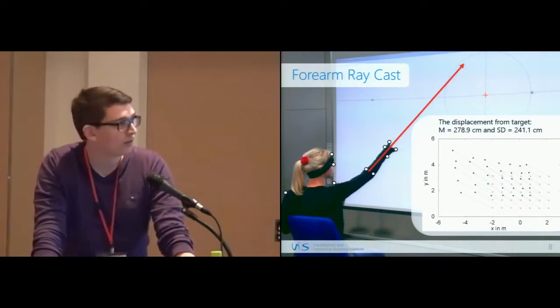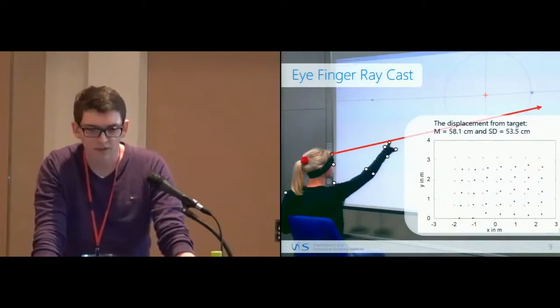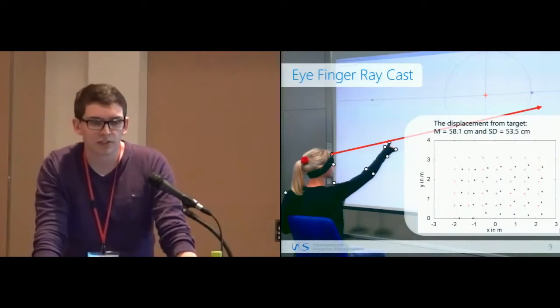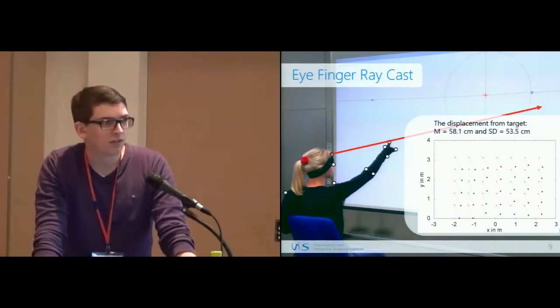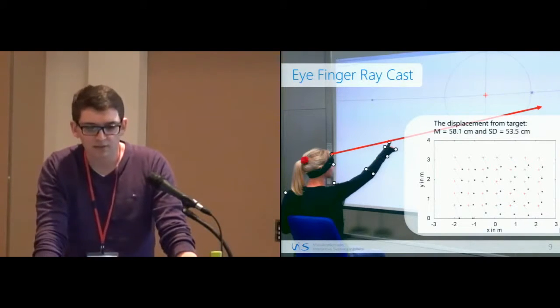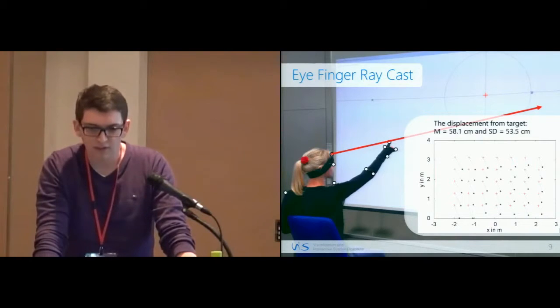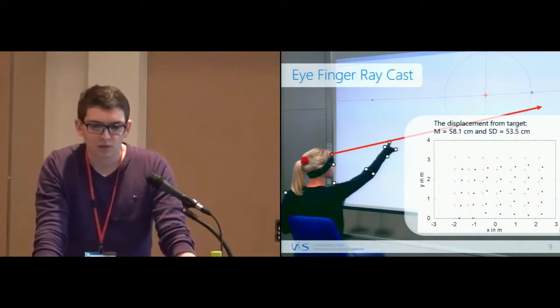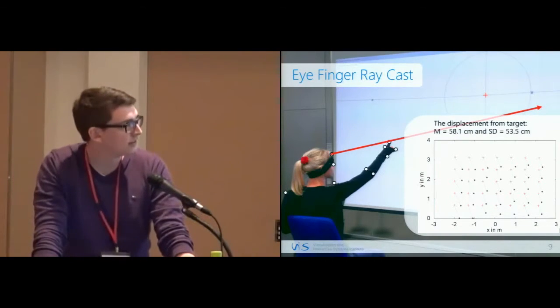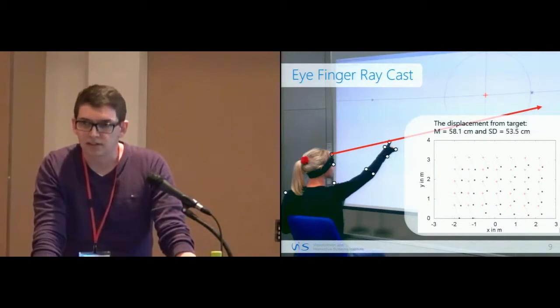The second raycasting technique was eye-finger raycasting. We used the two head markers and the one at the index fingertip. The displacement between the intersection point and the target was 58 centimeters. It was the lowest. You also can see the systematic displacement between the targets and intersection points.